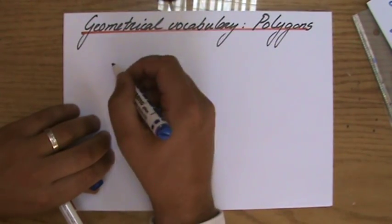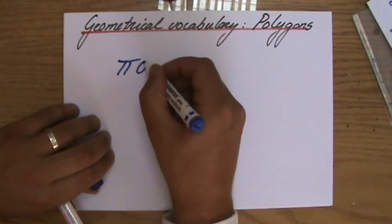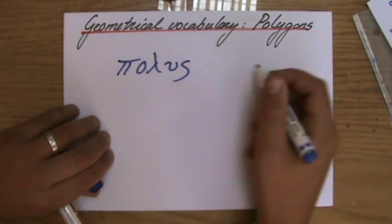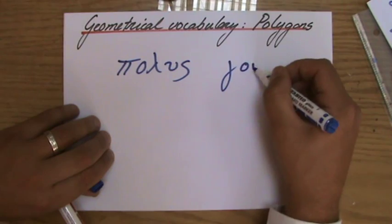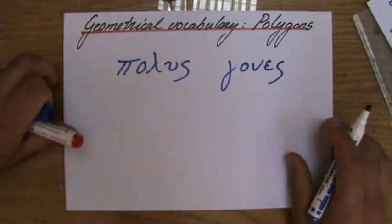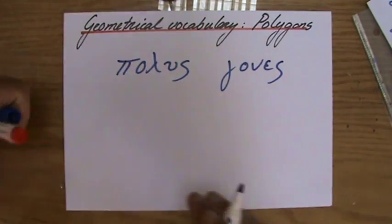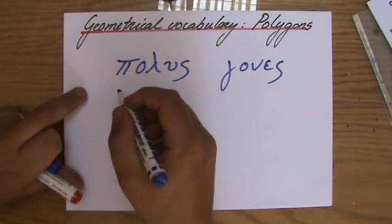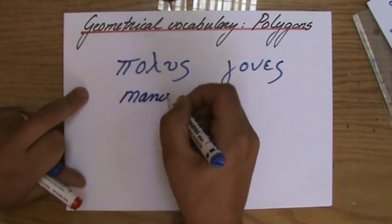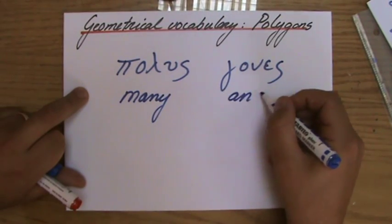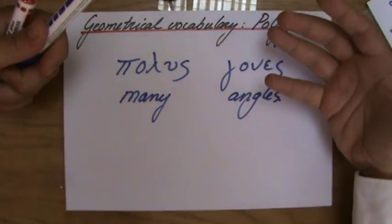Well, polygons, it's from the Greek. It's like, I think you spell it like this, polus, polus, and gones. And now, perhaps my Greek teacher from many years ago is screaming out loud, which is completely wrong. But polus gones means like many, and gones is like angles. So many angles.